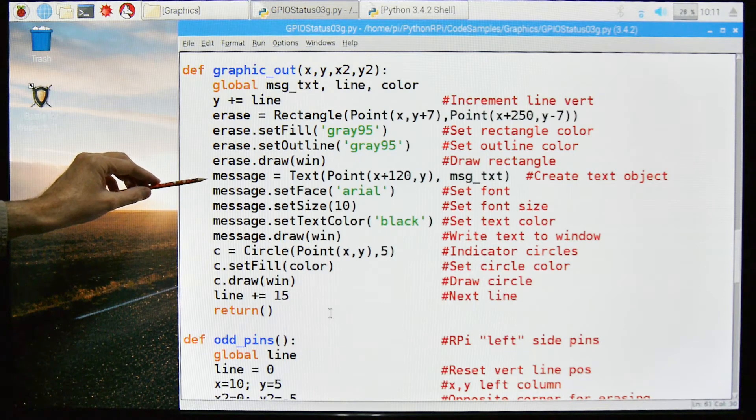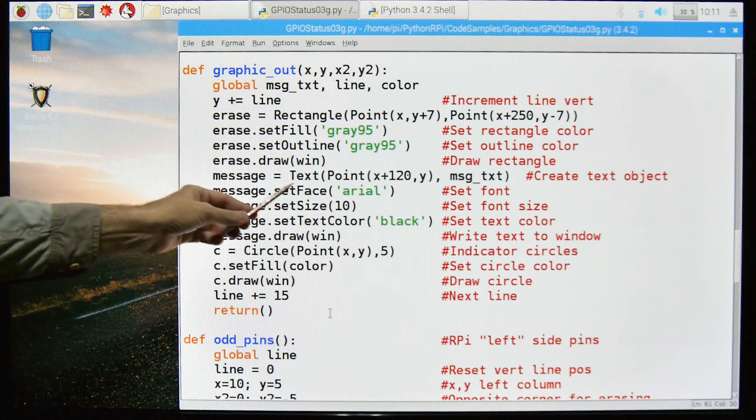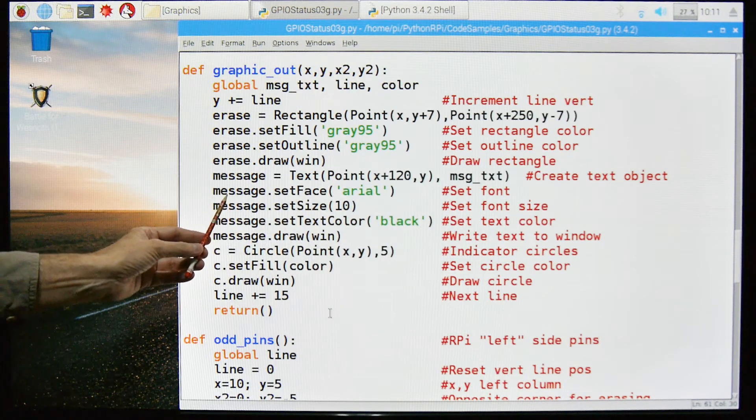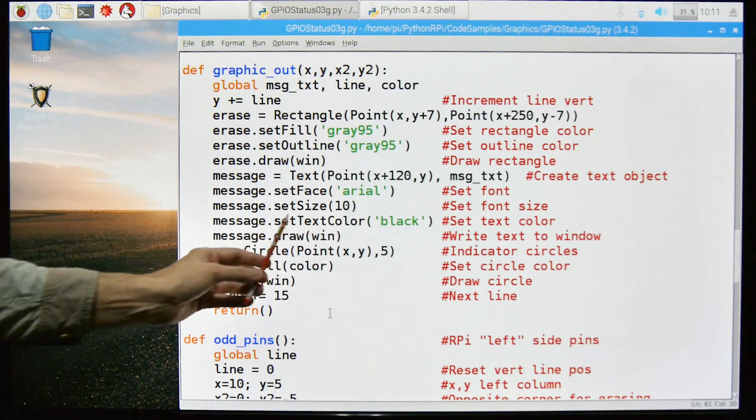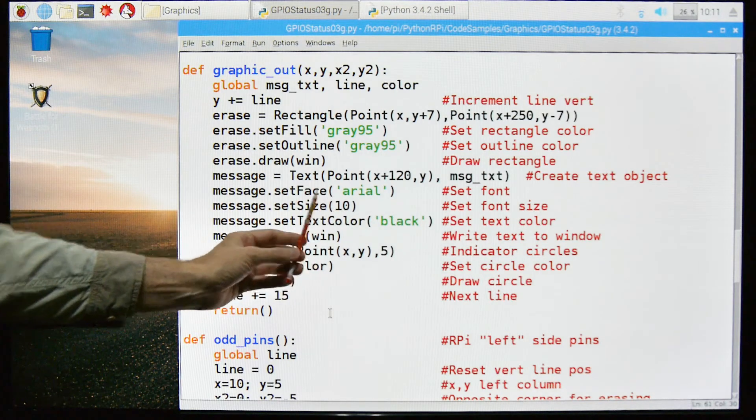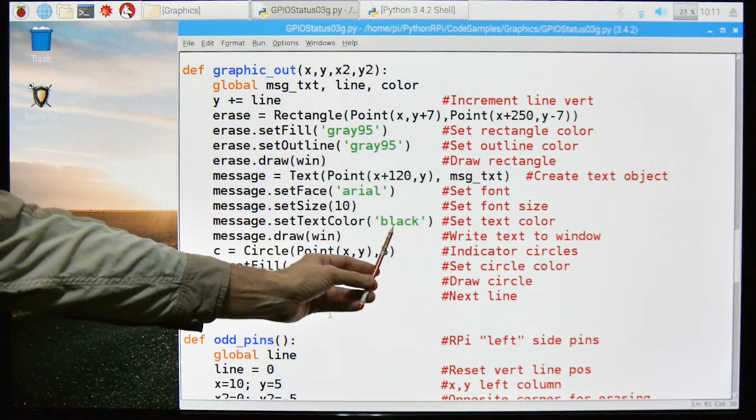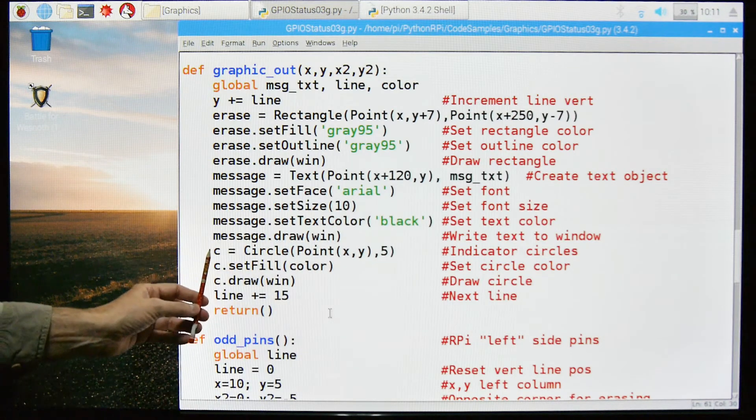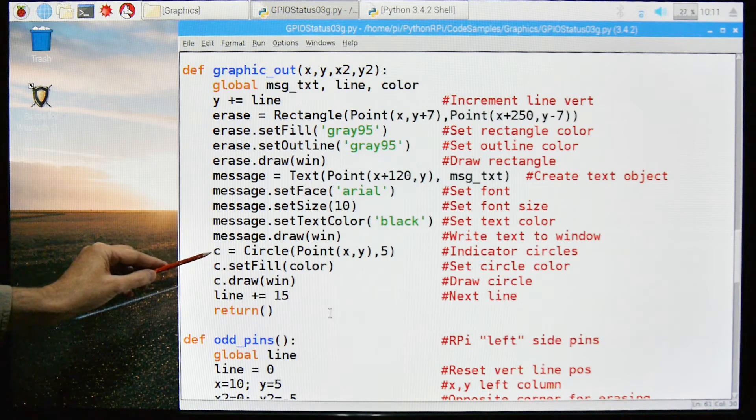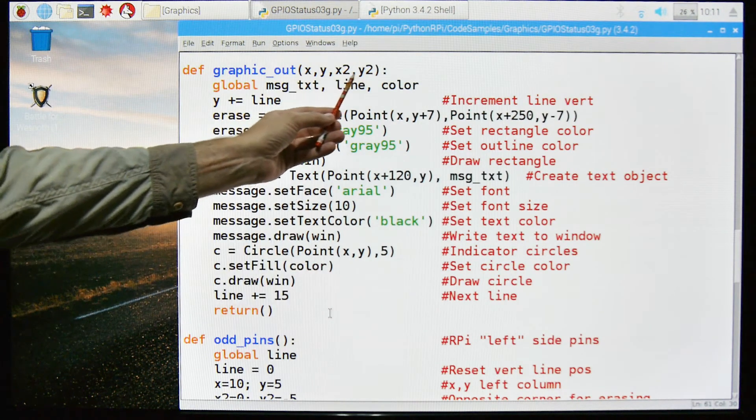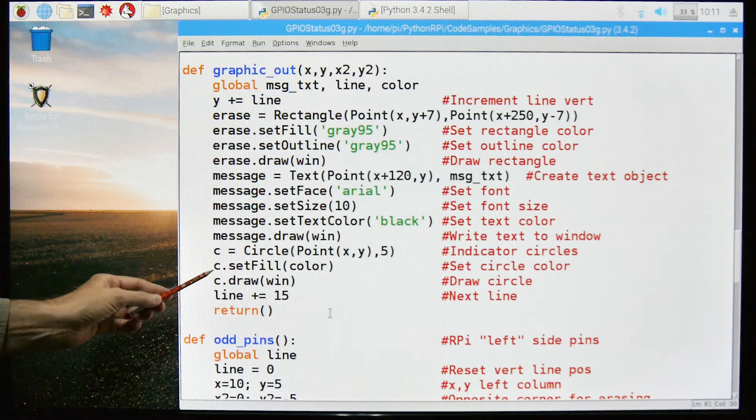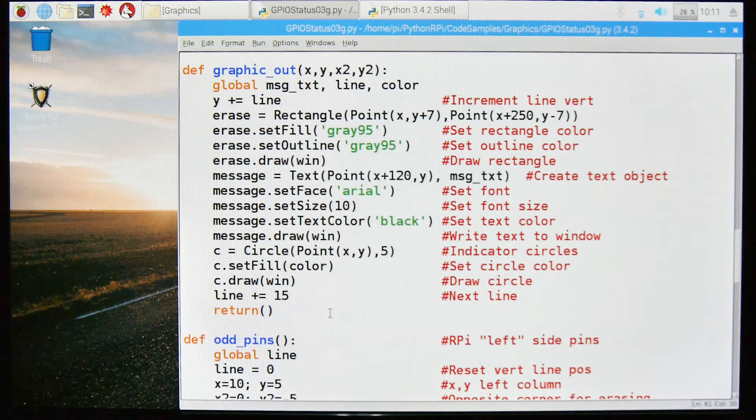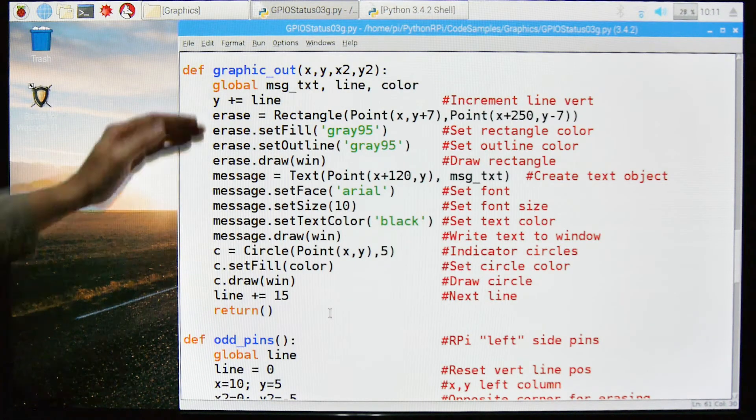And the last thing we're going to do is we're going to draw to the window all of this that we did right here, so we're going to draw a gray rectangle where we're going to write to. So we're going to blank out that area. The next thing we're going to do is we're going to get the message. We're going to create an object that's a message, a text, and we're again going to use these points offset, and we're going to put our message into that object. We're going to set the type font to Arial. We're going to set the size to 10. The size can vary, of course. We're going to set the text color to black, and again, kind of arbitrary, and then we're going to draw that text to the window. And then the last thing we're going to do is we're going to create an object of a circle, and it's a point, again, based on the inputs, and it's five pixels in diameter. We're going to fill it with a color that we passed it from up here. We're going to draw that, and then we're going to increment the line by 15 pixels, and then we're going to return.